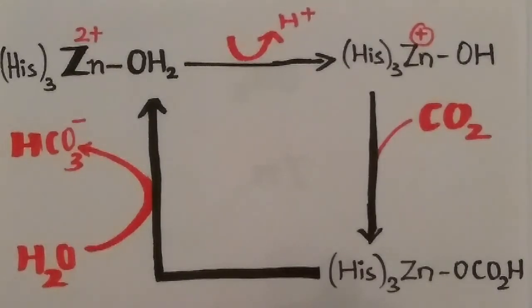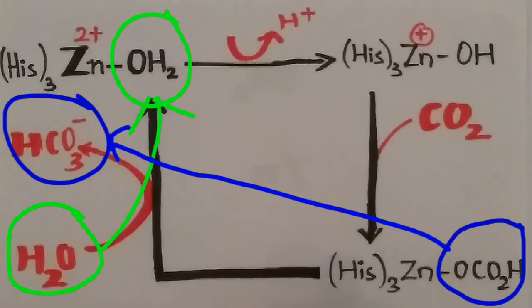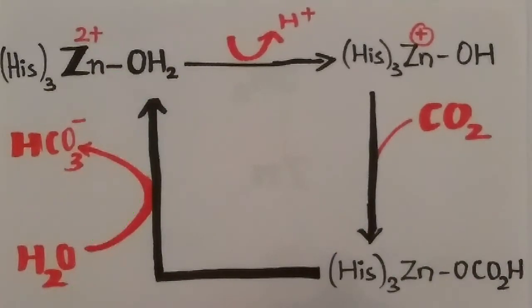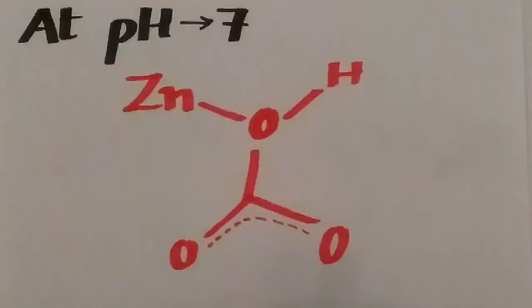Step 3 is the displacement of the bicarbonate molecule by the water molecule. At pH 7, the zinc ion in carbonic anhydrase reacts with CO2 to give this complex.